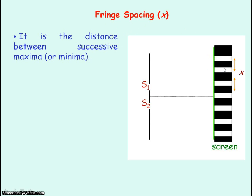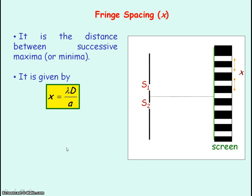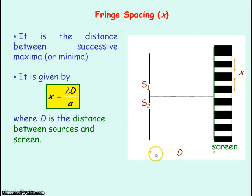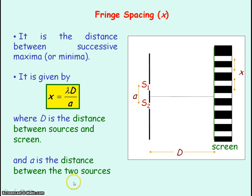Fringe spacing is the spacing or distance between successive — that is, consecutive or neighbouring — maxima, or the distance between successive minima. It is found from the equation where lambda is the wavelength, D is the large distance from our sources S1 and S2 to the screen where we observe the fringes, and A is the small distance between the two sources S1 and S2.